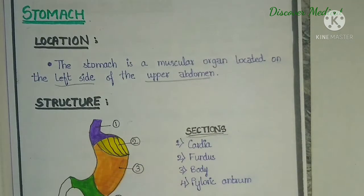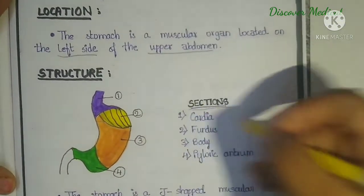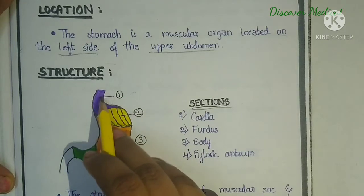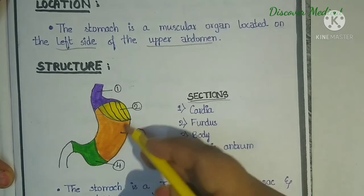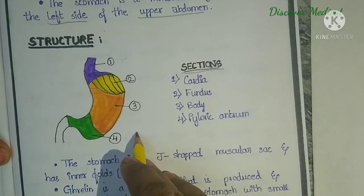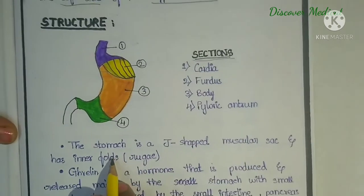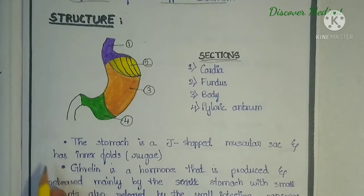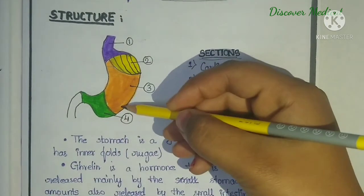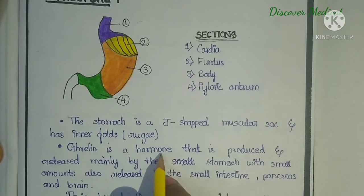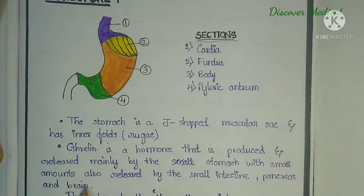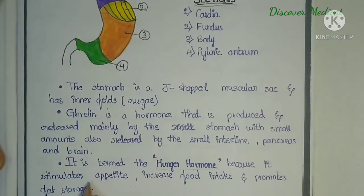The stomach is a muscular organ located on the left side of the upper abdomen. Its sections are: the cardiac region, fundus, body, and pyloric antrum. The stomach is a J-shaped muscular sac with inner folds called rugae. Ghrelin is a hormone produced and released mainly by the stomach, with small amounts also released by the small intestine, pancreas, and brain.